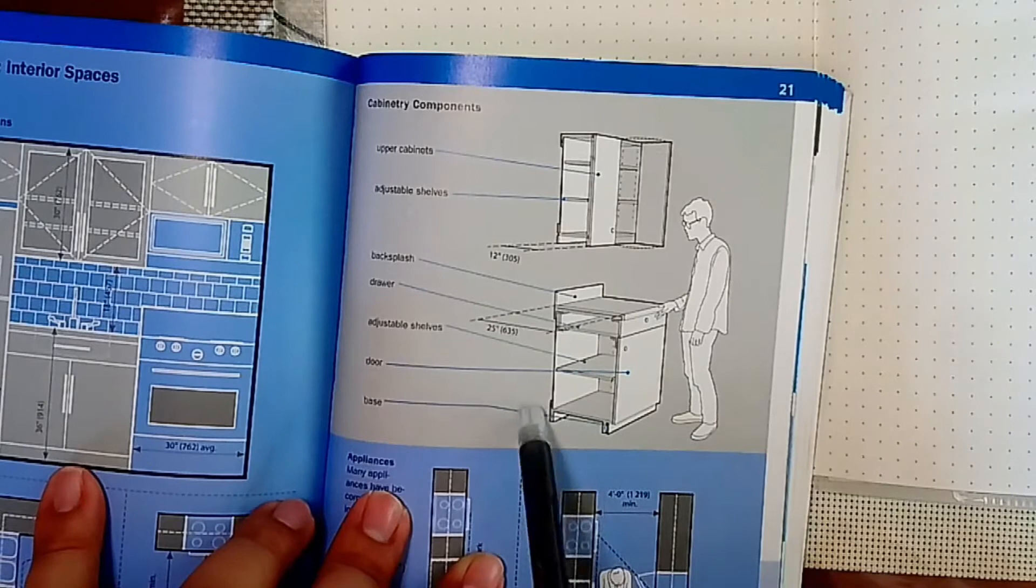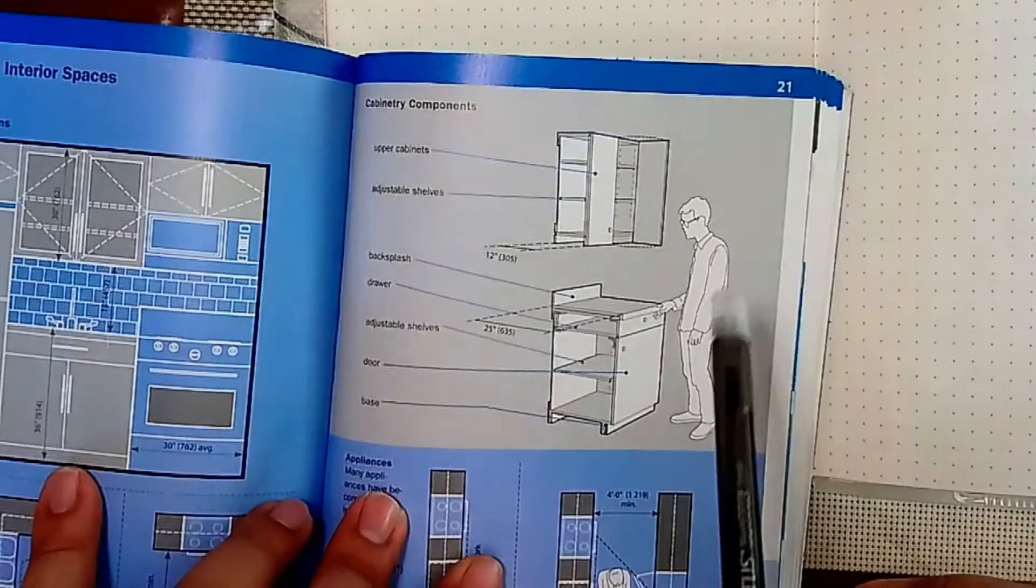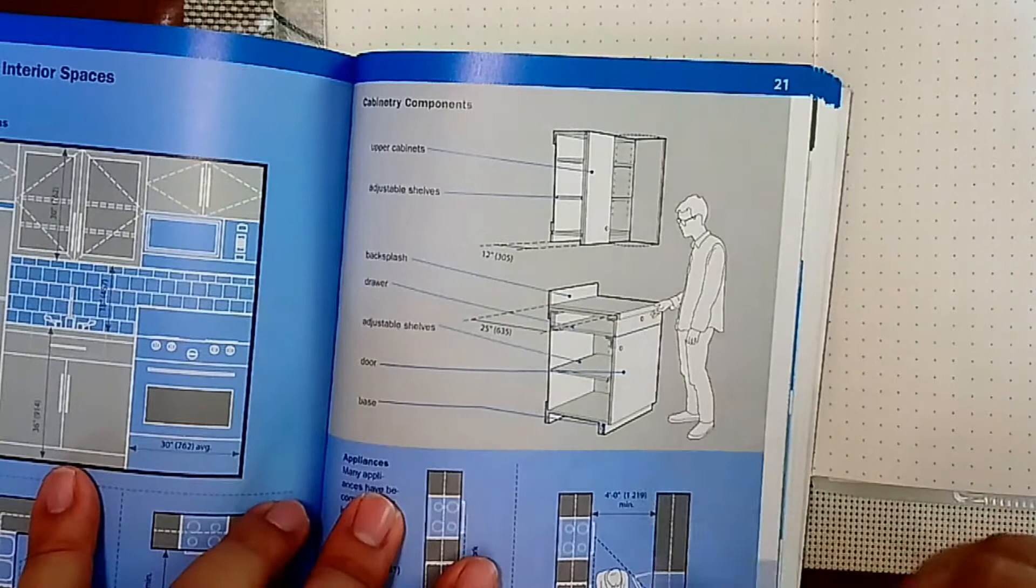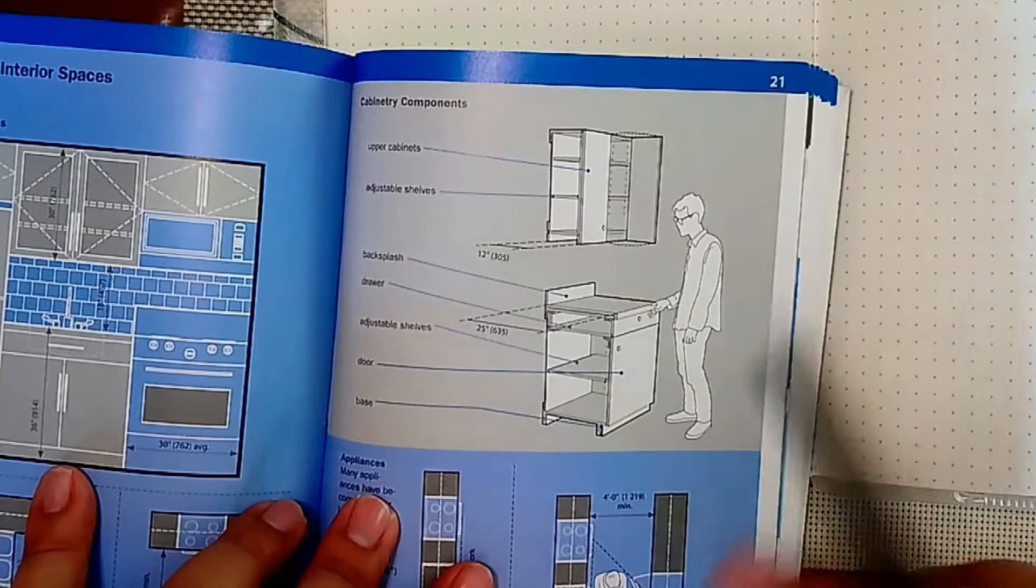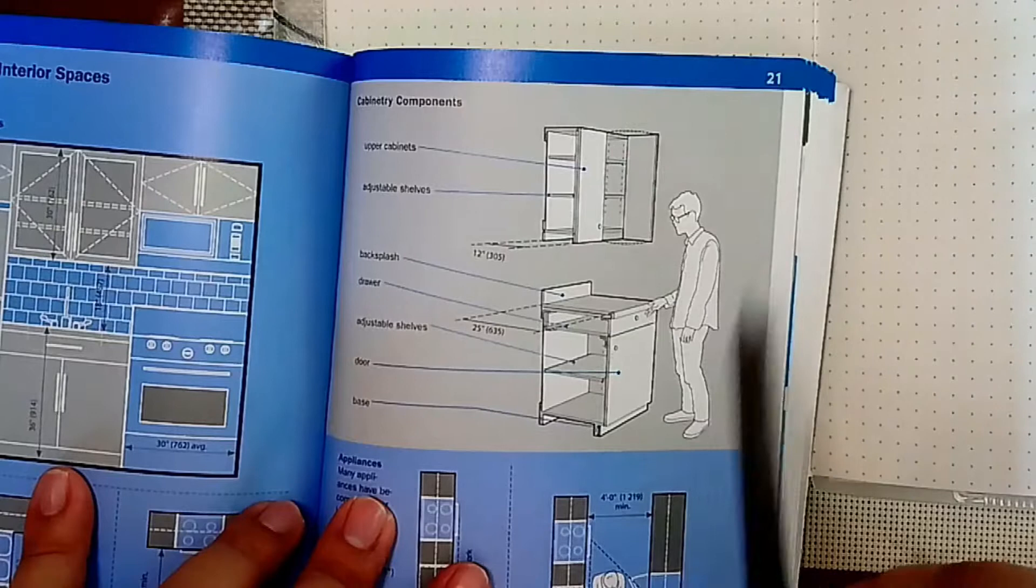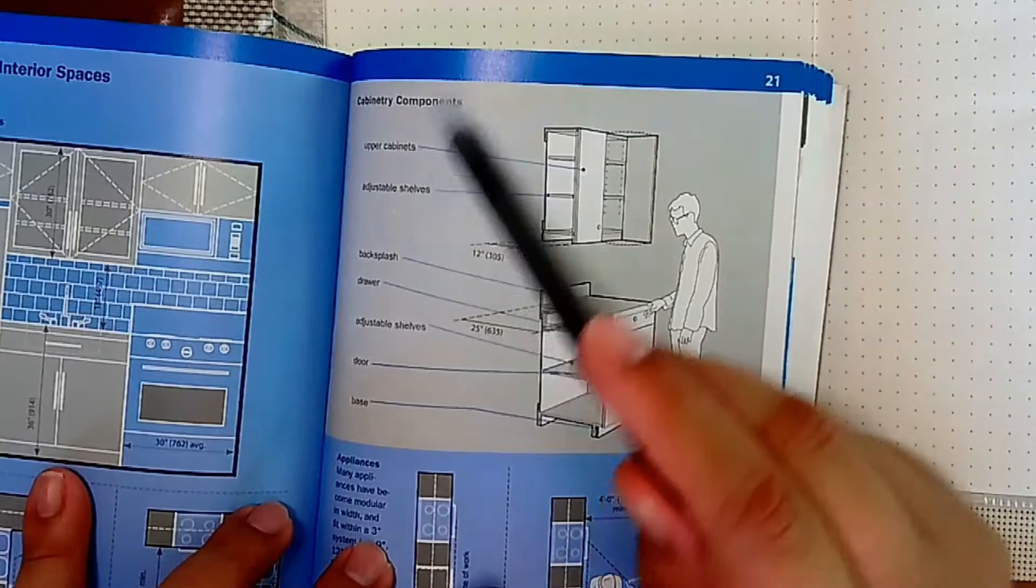You have a drawer, adjustable shelves, door, and your base. One of the common problems here in the Philippines with regards to kitchens is related to the infestation of insects, especially in your cupboards or inside your cabinetry because no light can reach in. One solution is the introduction of paint which can kill insects, but you could also do something more creative like making sure the backsides are illuminated well.